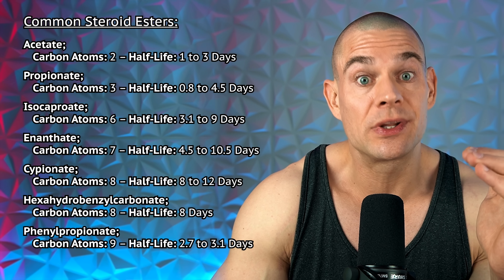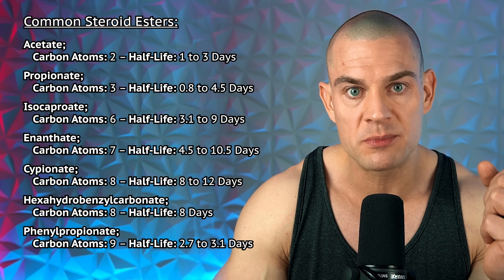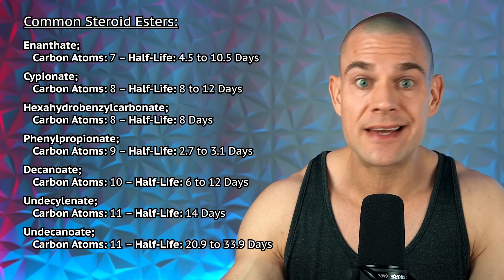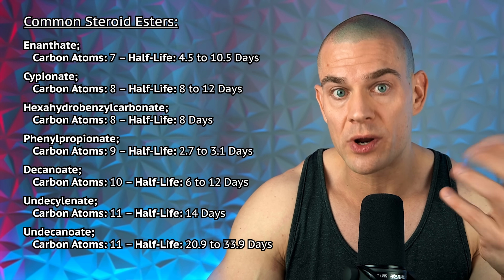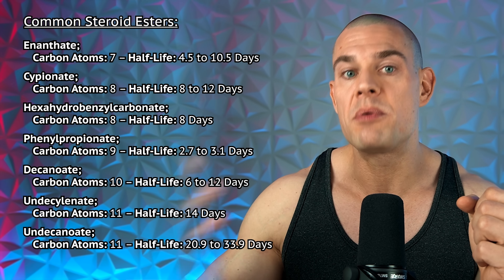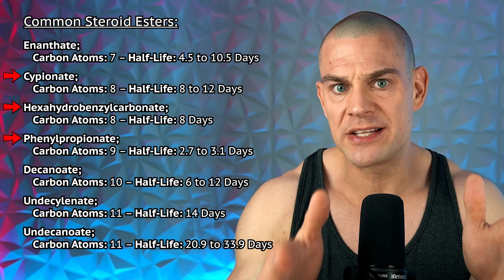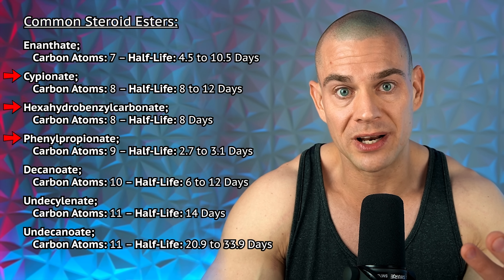The number of carbon atoms the steroid ester contains also determines how lipophilic the formulation will be. Steroid ester formulations with fewer carbon atoms allow for concentrations of 25 to 100 milligrams per milliliter — very common for acetate and propionate esters. The more carbon atoms an ester contains — cypionate, enanthate, decanoate, undecanoate — these allow for concentrations of 200 to 300 milligrams per milliliter. As a quick side note, phenylpropionate, cypionate, and hexahydrobenzylcarbonate have a cyclical benzyl structure at the end of the ester, which also affects esterase metabolism and how lipophilic the formulation can be.